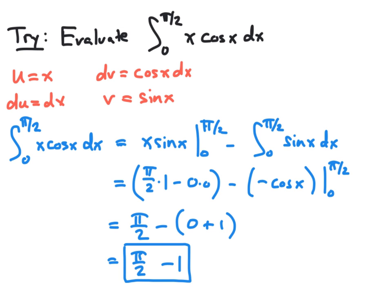We can substitute those functions into the integration by parts formula and evaluate x sine x from 0 to pi over 2. And that will result in simply pi over 2 once everything is simplified. And then we subtract from that the integral from 0 to pi over 2 of sine of x dx.